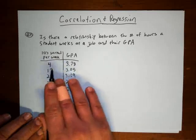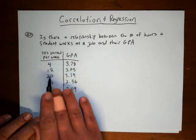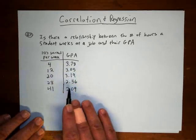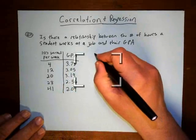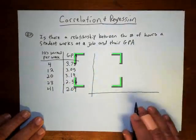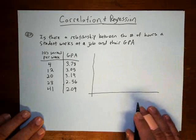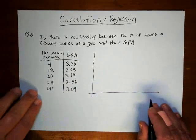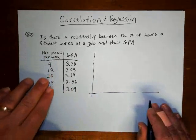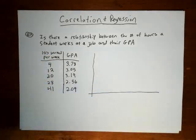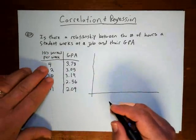These are like ordered pairs — x-coordinates and y-coordinates. In Chapter 2, we learned how you could get a visual picture of this. The horizontal axis represents the first column, which would be the hours that they work.